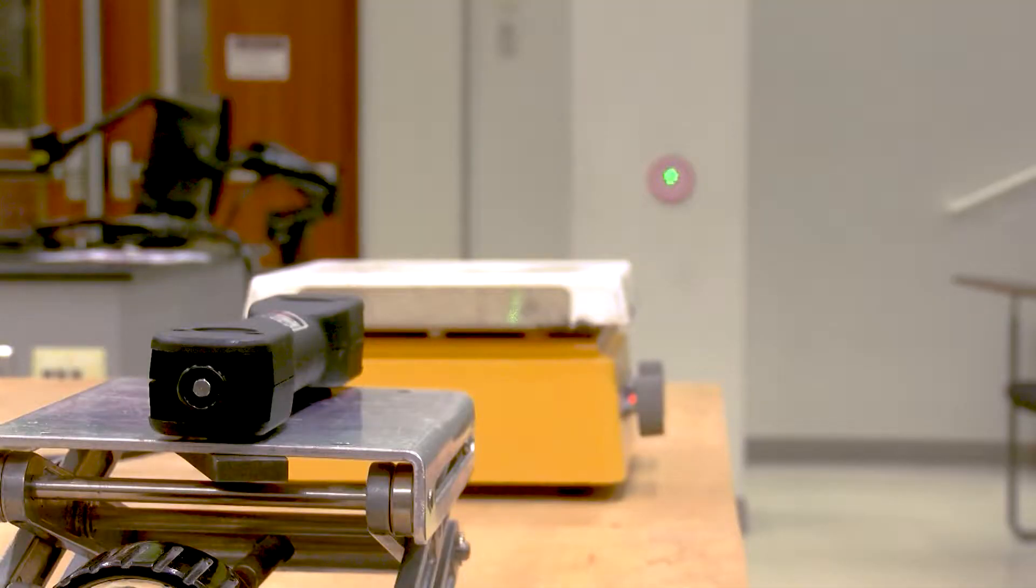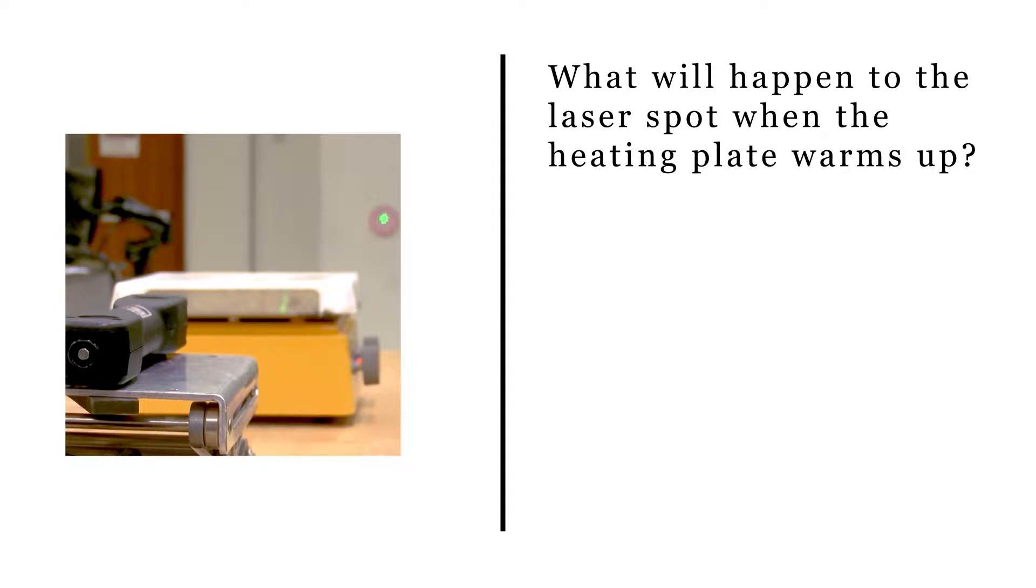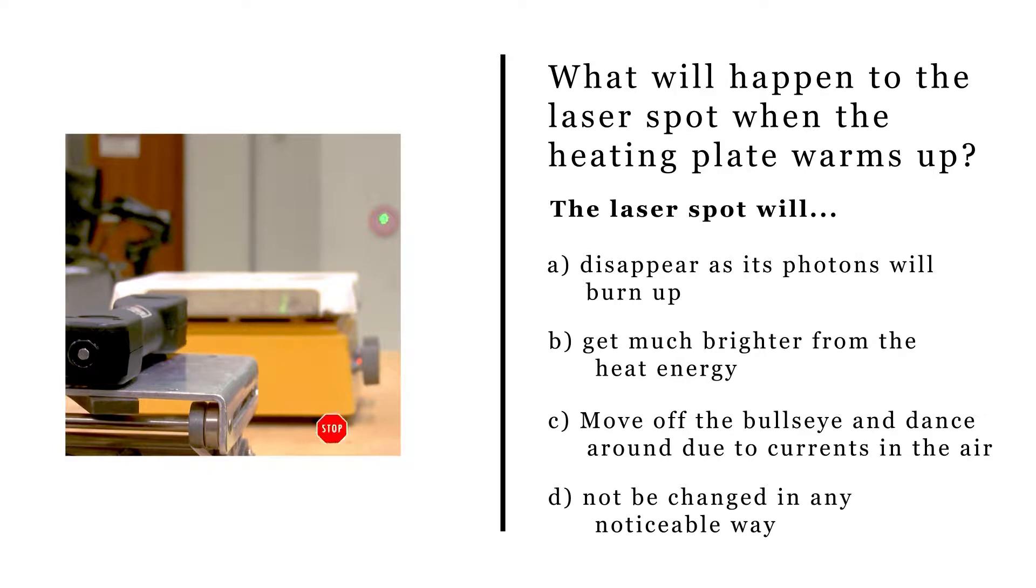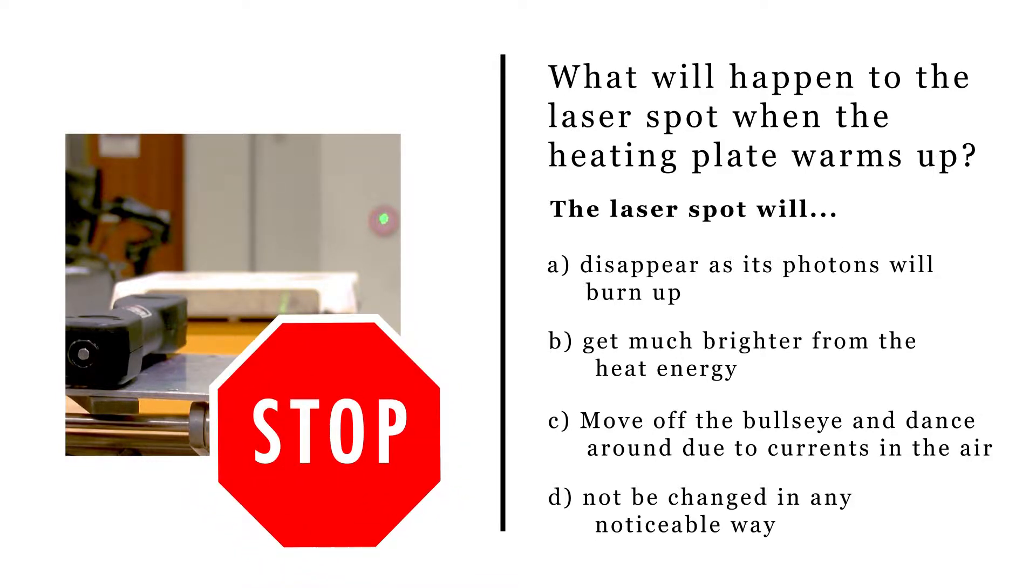Let's explore this in a peer instruction question. What will happen to the laser when the heating plate warms up? A. Disappear as its photons will burn up. B. Get much brighter from the heat energy. C. Move off of the bullseye and dance around due to currents in the air. D. Not be changed in any noticeable way. Classroom students should follow normal procedures or instructor guidelines. Viewers not in a classroom should record your vote and explain your reasoning on a piece of paper. Please pause this video and answer the question.